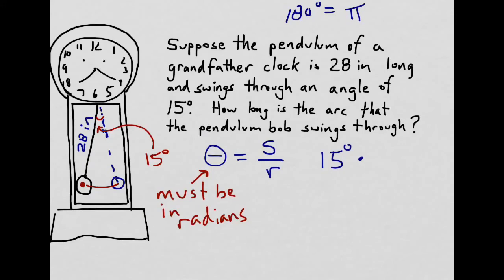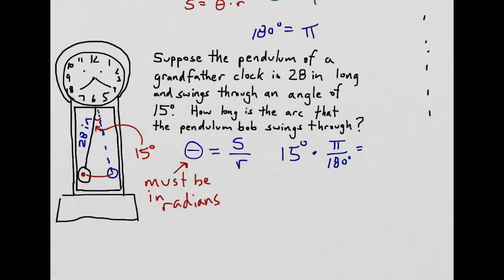And so if I want to cancel out those degrees, I multiply by pi over 180 degrees. And that turns into 15 pi over 180, but 15 goes into 180 exactly 12 times. 180 is 12 times 15. So this is the same as pi over 12. So the radian value that we can use in the formula is pi over 12.